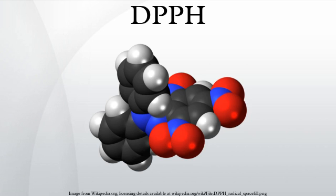The number of initial radicals can be counted from the change in the optical absorption at 520 nanometers or in the EPR signal of the DPPH.